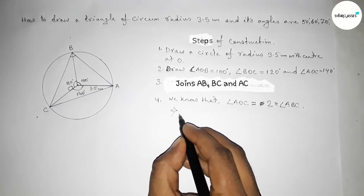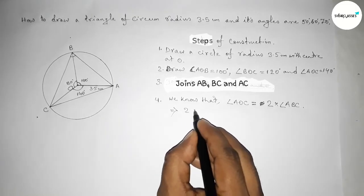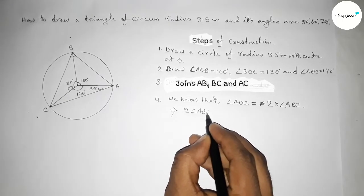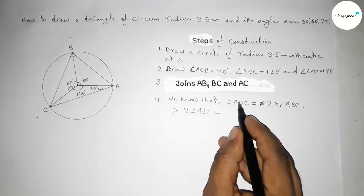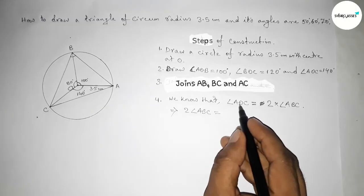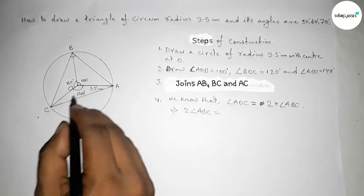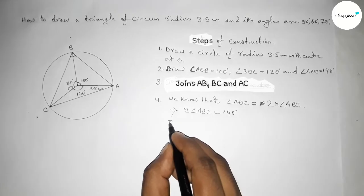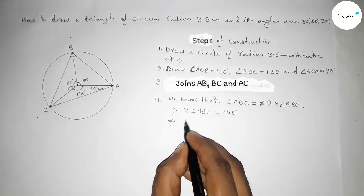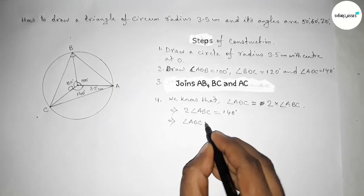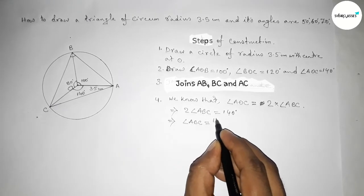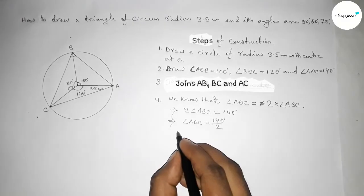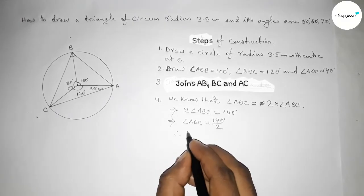So, this implies that 2 × angle ABC = 140 degrees, therefore angle ABC equals 140 divided by 2, which gives angle ABC equals 70 degrees.